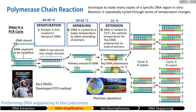In annealing, the mixture is cooled down to 50 to 65 degrees Celsius to allow annealing, or attachment of primers by hydrogen bonding to the DNA templates. Primers indicate which segment of DNA will be amplified. Forward and reverse primers are used for the 5' and 3' end of the DNA template.